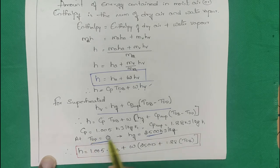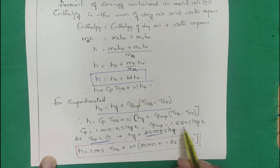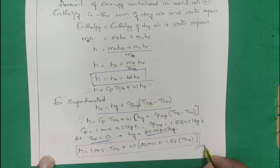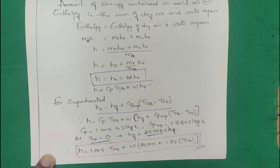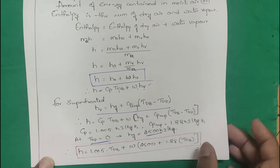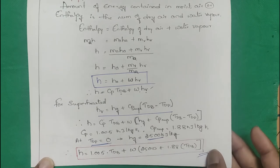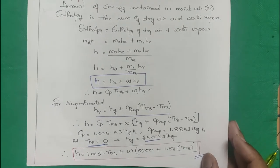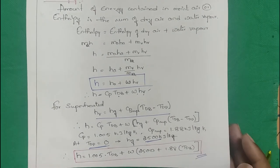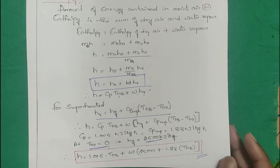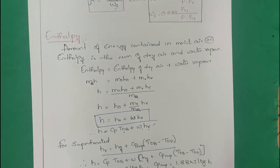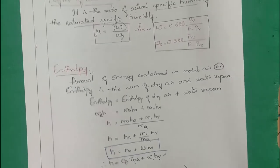With Cp of dry air = 1.005 and Cp of superheated vapor = 1.88, substituting gives the very important formula: h = 1.005 Tdb + W × (2500 + 1.88 × Tdb), where W is specific humidity.